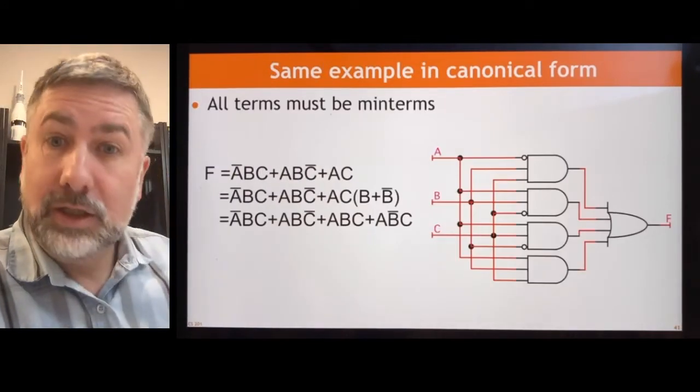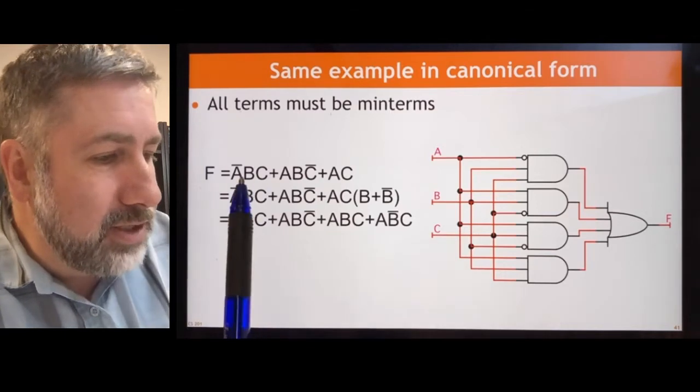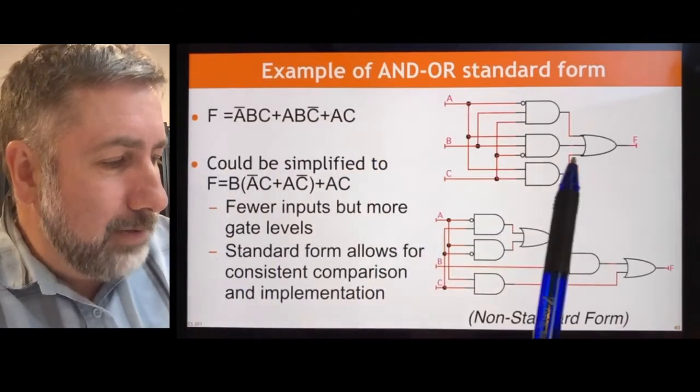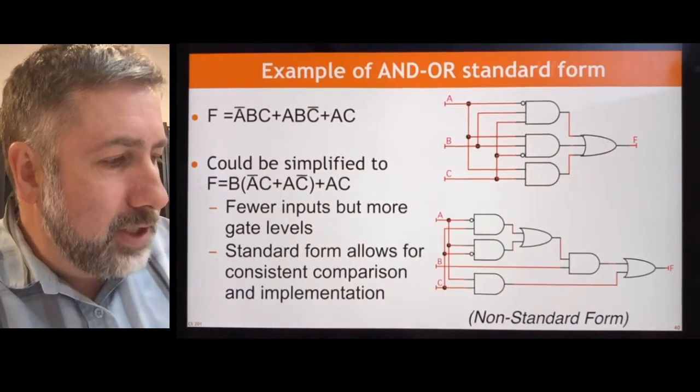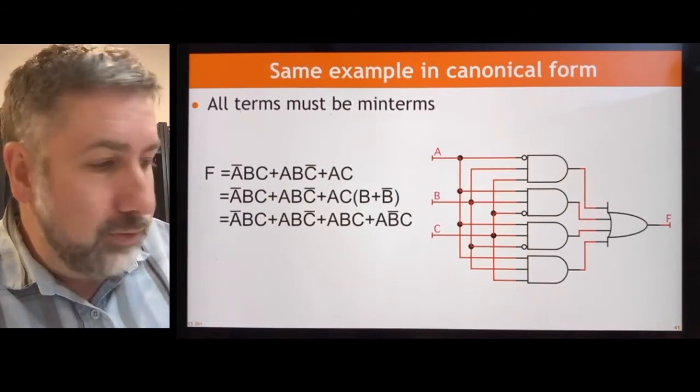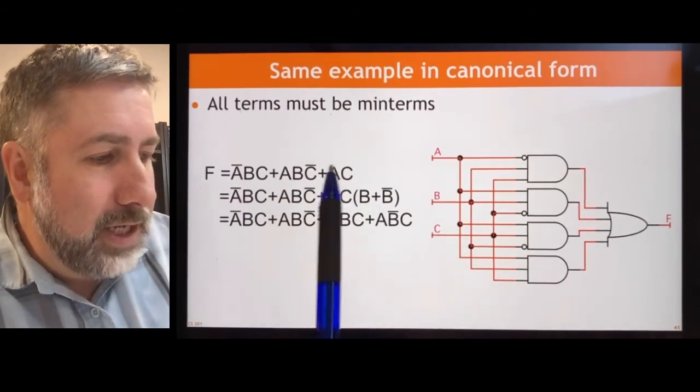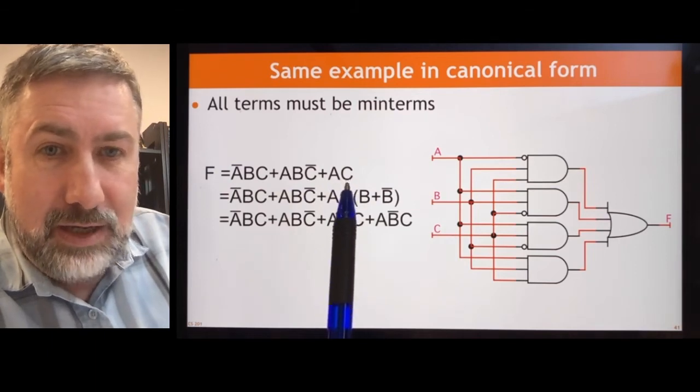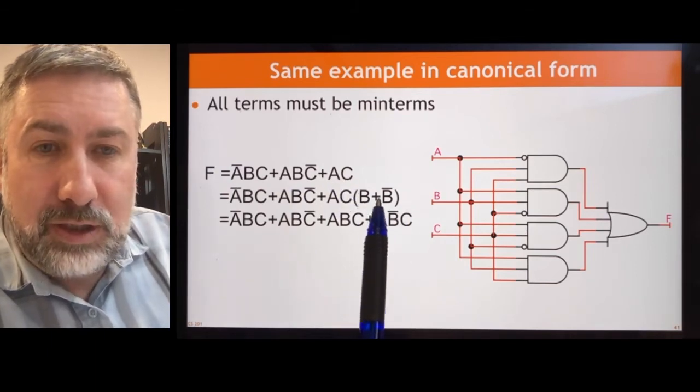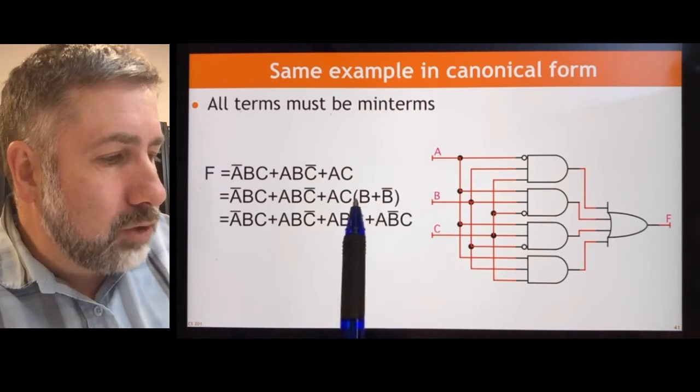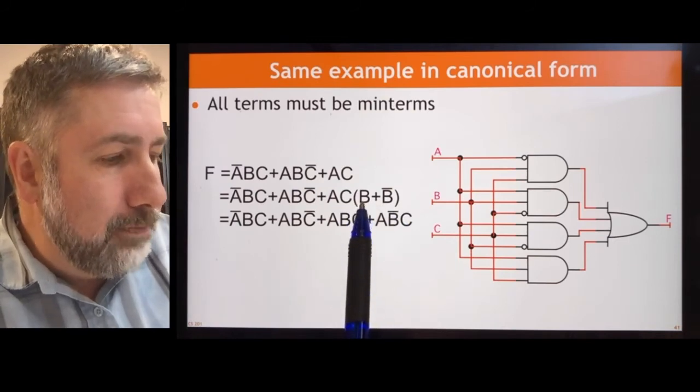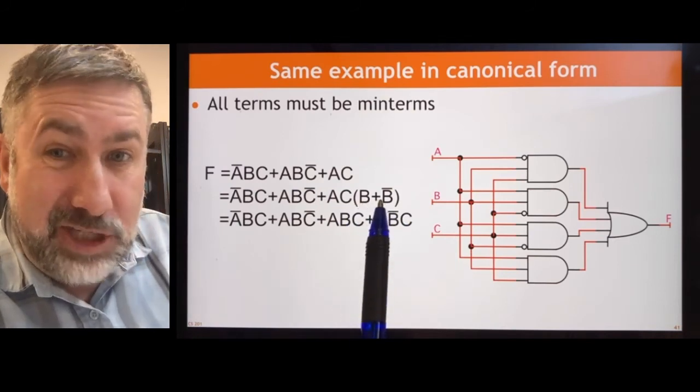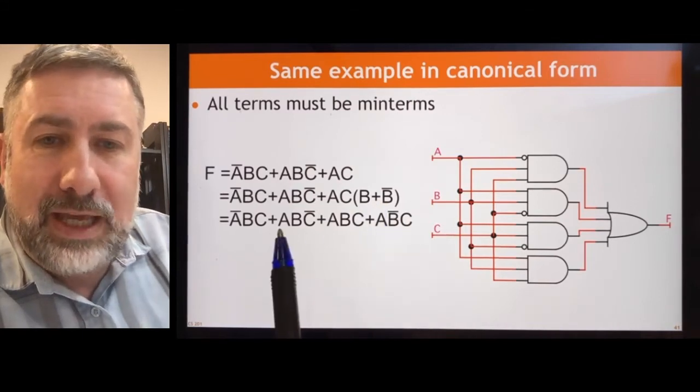Here's another example in canonical form. Now if we take this original function from this previous example, this is the standard form implementation. Here it is implemented in canonical form. Just like we did before, we can take the term that is missing a variable. AC doesn't have any B in it. We can expand it using our logical rules that tell us that we can put a B or B prime in it without changing the value. And then we get minterms.